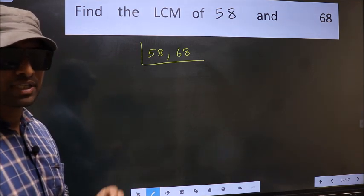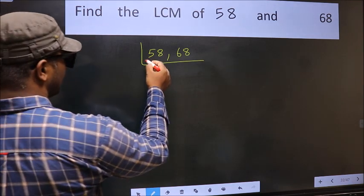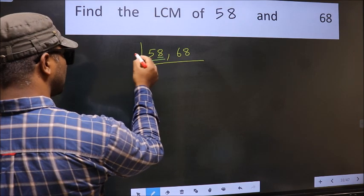Now you should focus on the first number which is 58 here. For this number, last digit 8, even. So take 2.